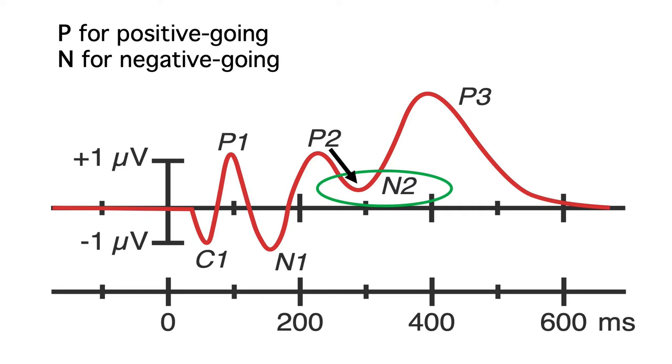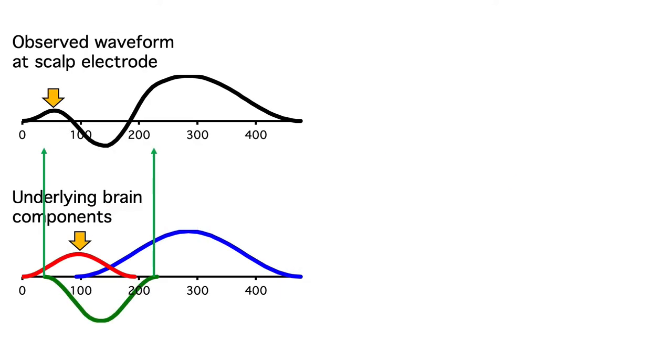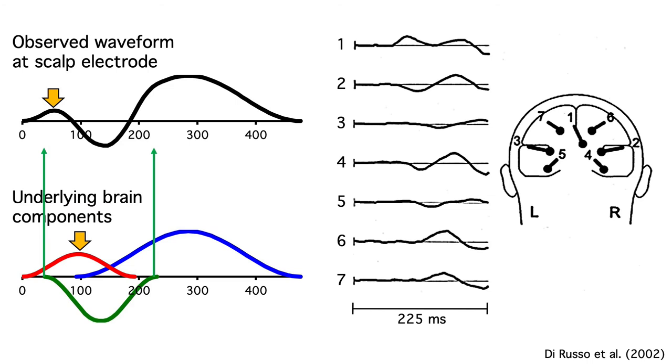This naming convention might seem straightforward, but it can get pretty complicated and confusing. As I mentioned before, the relationship between the timing of the underlying component and the timing of the observed peak can be pretty complicated. And there are way more underlying components than visible peaks. In fact, a given component might not have a single distinct peak.